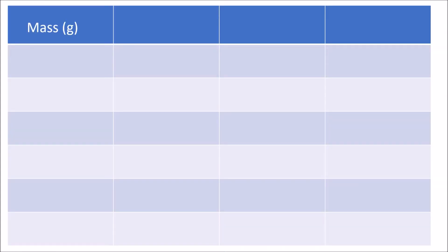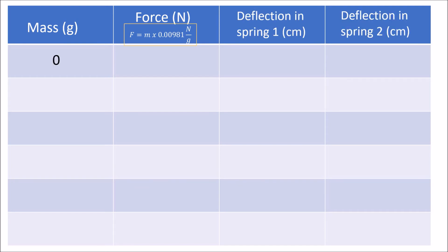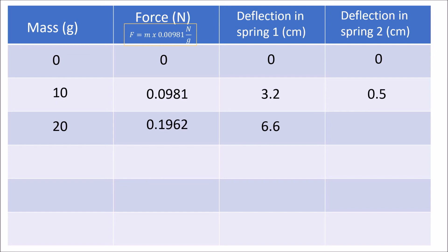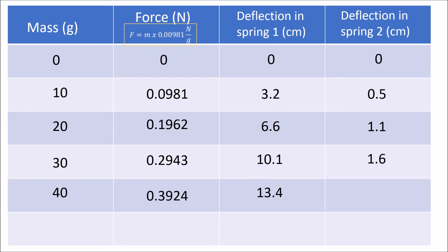Now let's have the summary of our experiment. For the mass, we have 0, 10, 20, 30, 40, and 50 grams. We will get the force in Newtons by multiplying the mass times G, the acceleration due to gravity, which is 0.00981 Newtons per gram. Later, we will get the spring constant.